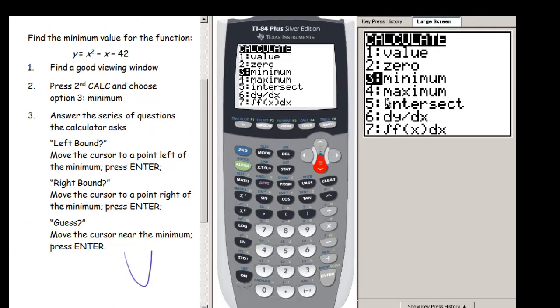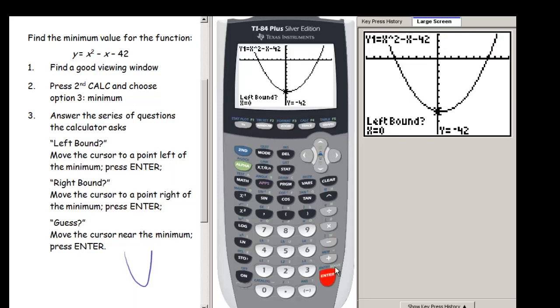And we want to find the minimum value so we're going to choose option 3. Finding a maximum value is going to work the same way as finding a minimum value. Now, once we choose that our calculator is going to ask us a series of questions.